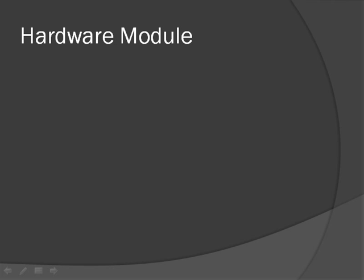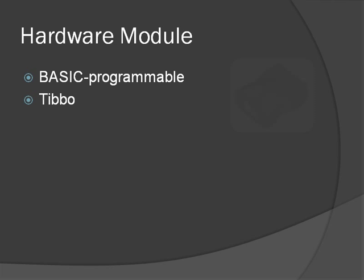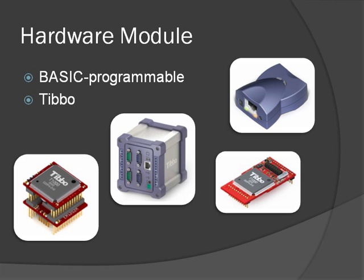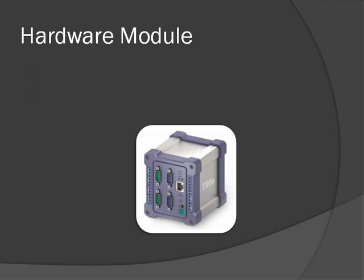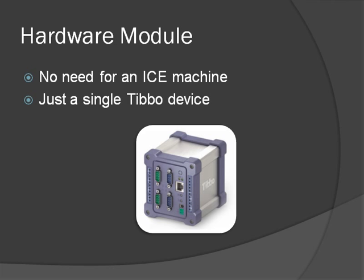This is called a hardware module, and it's basically any TiVoBasic-programmable TiVo device. For example, the DS1000 is programmable, has four ports, and is very rugged. You don't need an ICE machine — you just need that TiVo device. The application runs on it.